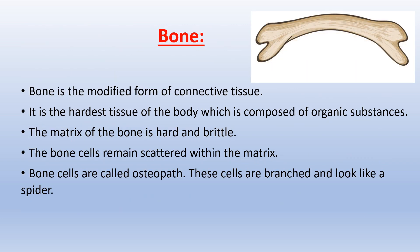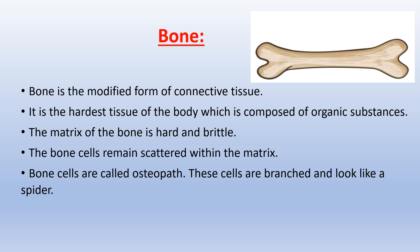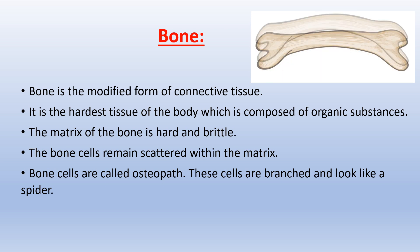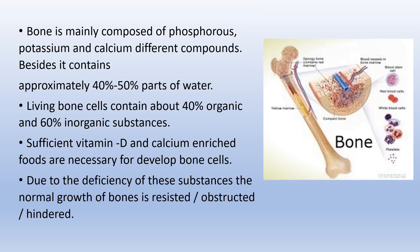Bone is the modified form of connective tissue. It is the hardest tissue of the body, composed of organic substances. The matrix of the bone is hard and brittle. The bone cells remain scattered within the matrix. Bone cells are called osteocytes. These cells are branched and look like a spider. Bone is mainly composed of phosphorus, potassium, and calcium compounds. It contains approximately 40–50% water. Living bone cells contain about 40% organic and 60% inorganic substances. Sufficient vitamin D and calcium-enriched food are necessary; deficiency of these substances resists the normal growth of bones.